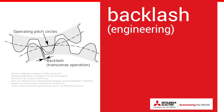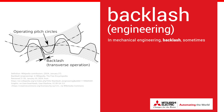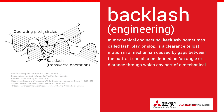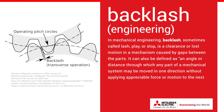So what is backlash? In mechanical engineering, backlash, sometimes called lash, play, or slop, is a clearance or lost motion in a mechanism caused by gaps between the parts. It can also be defined as an angle or distance through which any part of a mechanical system may be moved in one direction without applying appreciable force or motion to the next part in a mechanical sequence.